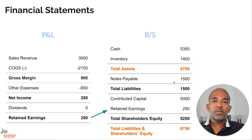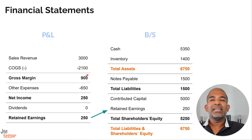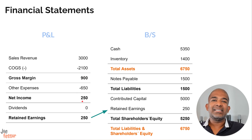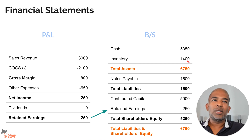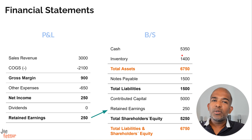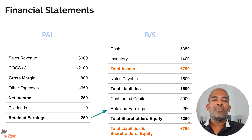On the income statement, we see sales revenue of $3,000 and cost of goods sold of $2,100, resulting in a gross profit of $900, which increases net income. On the balance sheet, cash increases to $5,350, inventory decreases to $1,400 (we had $3,500 and sold $2,100 worth, so what's left is $1,400), and owner's equity increases to $5,250, reflecting the net income earned from the sale.